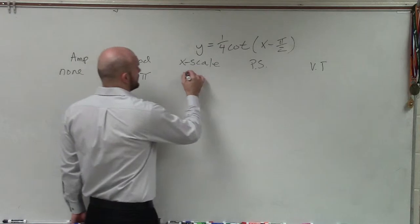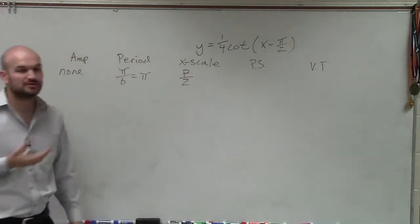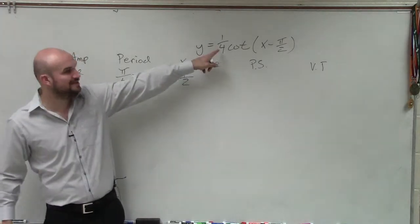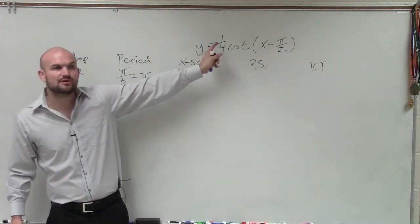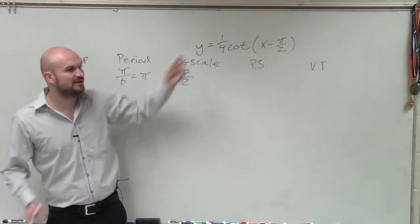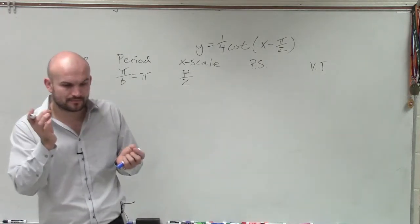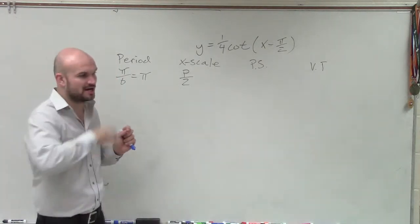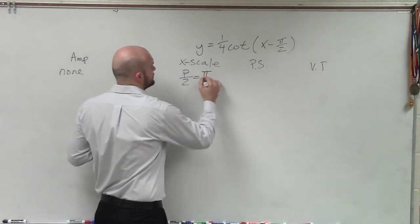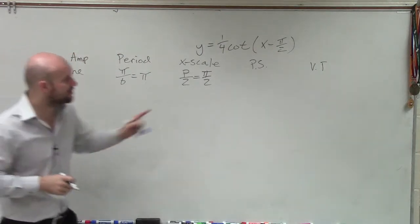Our x scale is going to be, remember, your period divided by 2. You can still do it divided by 4. And for this case, divided by 4 would probably help you because you can see that this graph is actually going to be, there's going to be a dilation on this. So dividing by 4 and figuring out those other two points that are not really your important points, but they are going to help you shape the graph. Point of ways, I'm just going to leave it as π over 2, because again, I'm just not so much worried as far as those other two points.